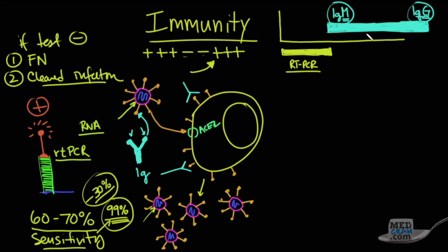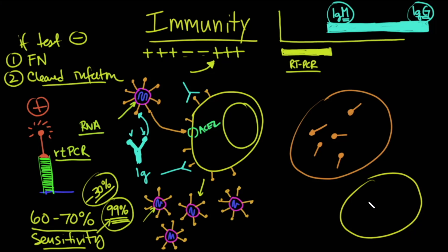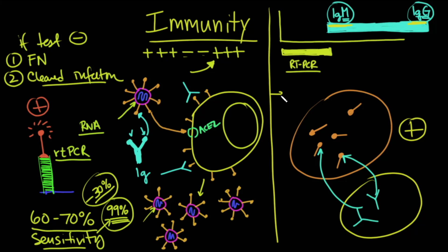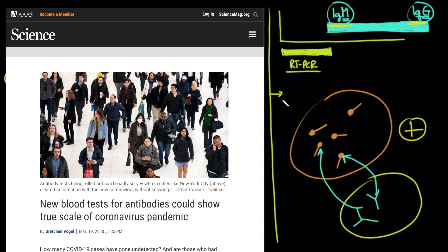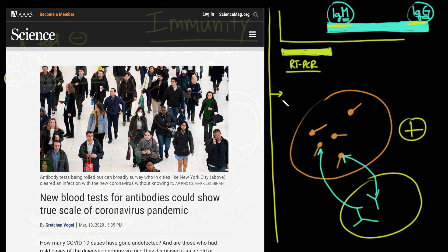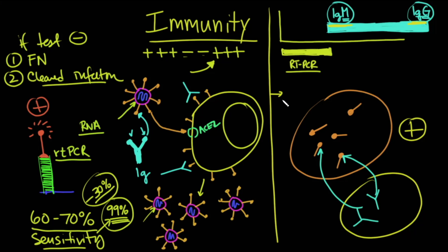To test for these antibodies, scientists manufacture small portions of those spike proteins. When mixed with a patient's blood, if antibodies are present they will bind to those manufactured spike protein fragments, triggering a detectable reaction — a positive test. The test can also differentiate between IgM and IgG. This antibody testing is just now starting to come online. Even if you never had symptoms, you'll be able to know whether or not you've been infected. There is an important difference between PCR testing and antibody testing.